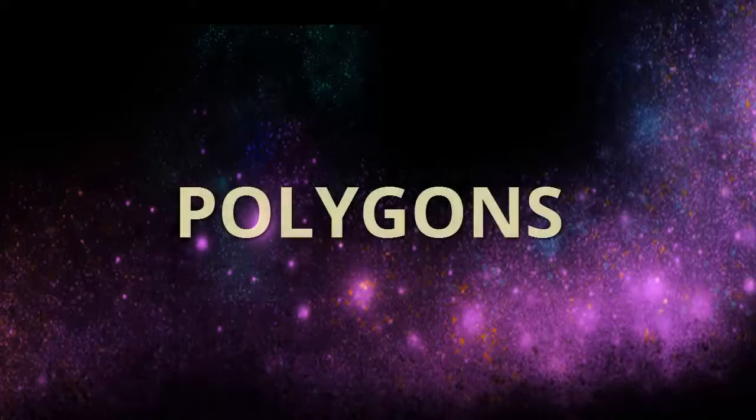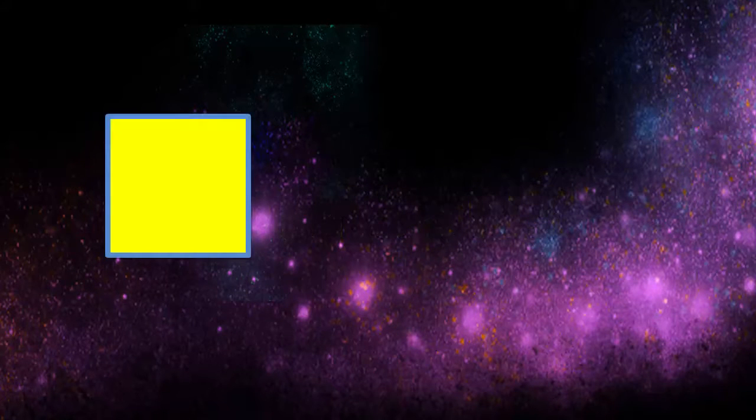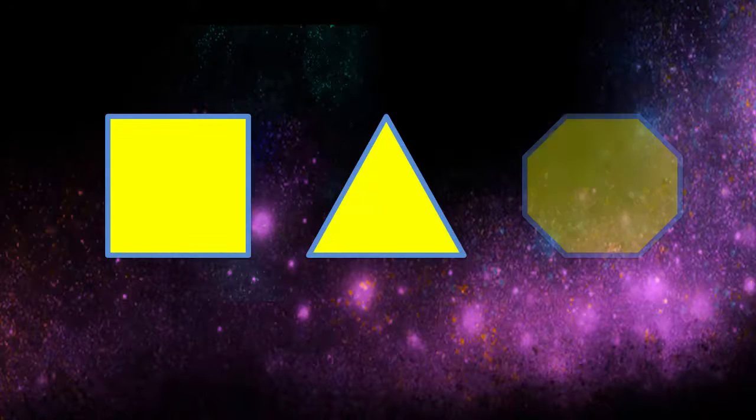A polygon, of course, is a shape bounded by a finite number of edges, or sides. You may be familiar with polygons such as the square, the triangle, and a lovely and mysterious octagon.